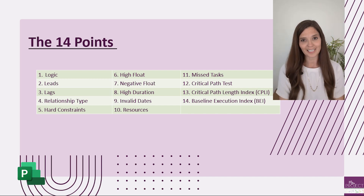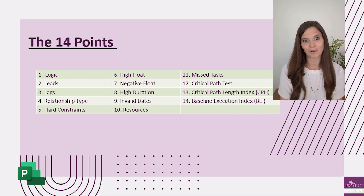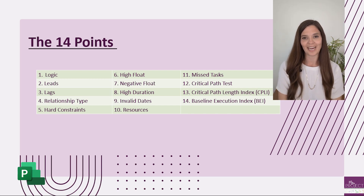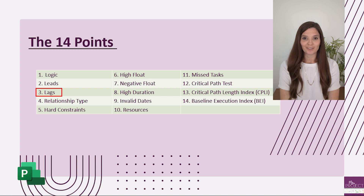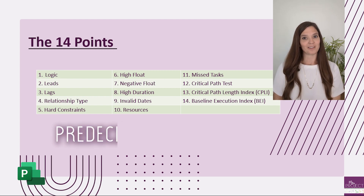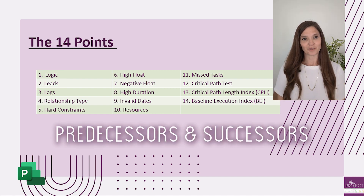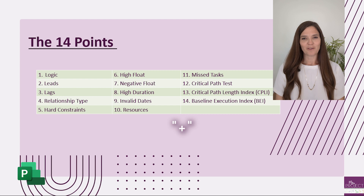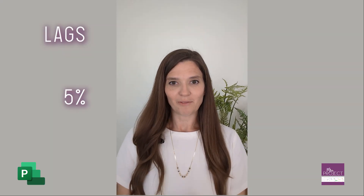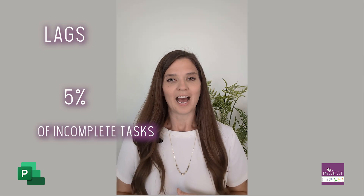The third DCMA 14-point metric is looking at lags. Just like leads, it's looking at predecessors and successors and looking for a positive number. DCMA does allow 5%, so if 5% of your total open tasks have a positive lag, it is allowed.